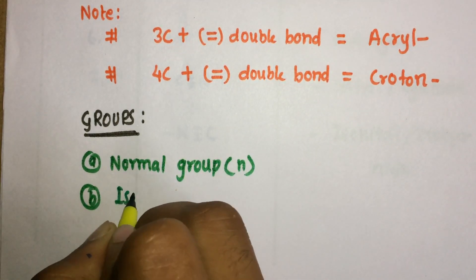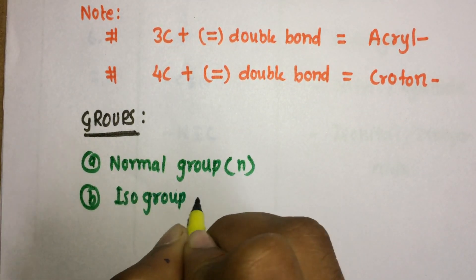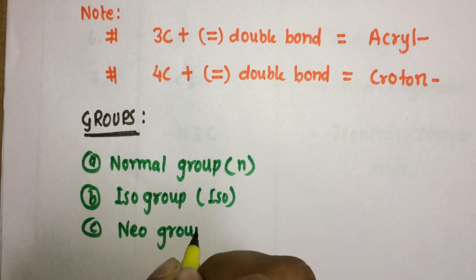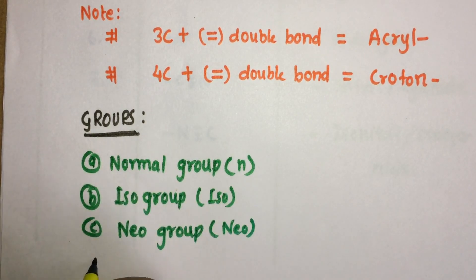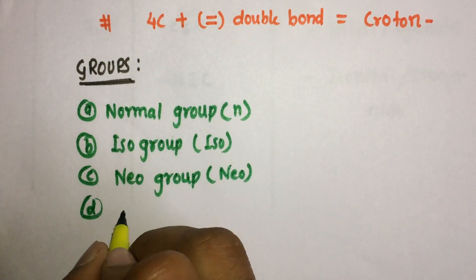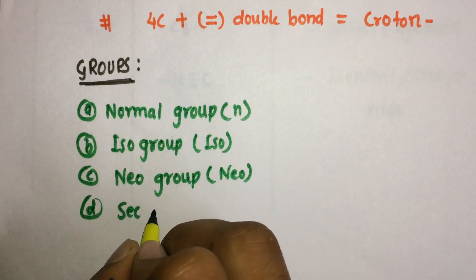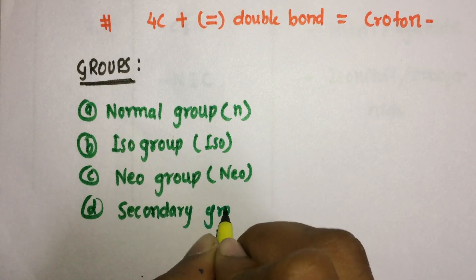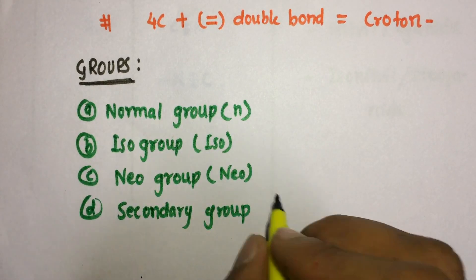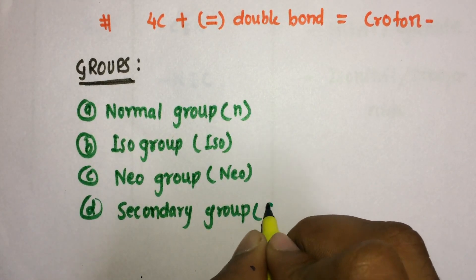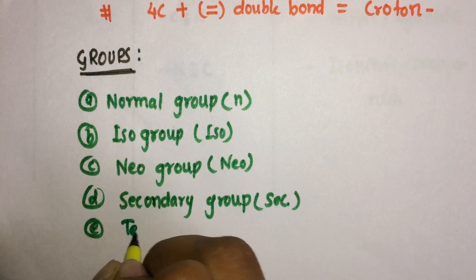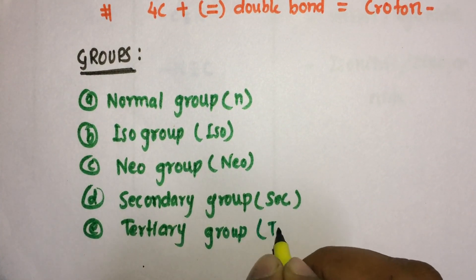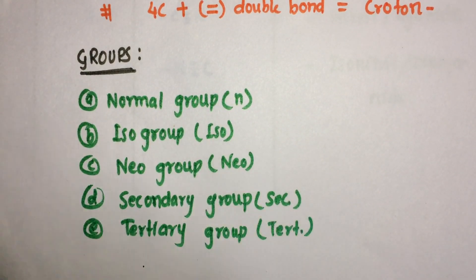Now, groups: these may be normal groups, iso groups, neo groups, secondary groups, or tertiary groups.